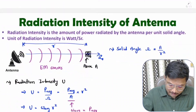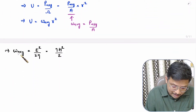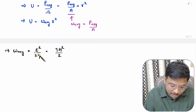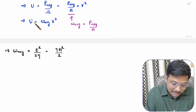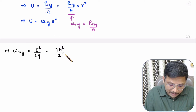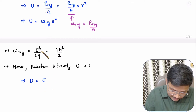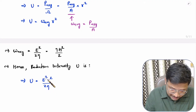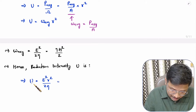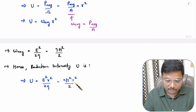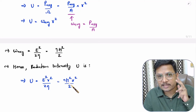Average power density is E²/2η and also ηH²/2. If you substitute this into the radiation intensity formula, then radiation intensity U in form of electric field is E²R²/2η, and radiation intensity U in form of magnetic field is ηH²R²/2. That is how we can calculate radiation intensity.